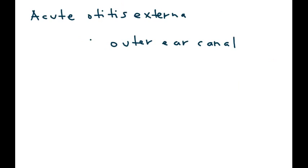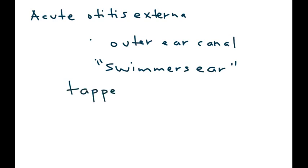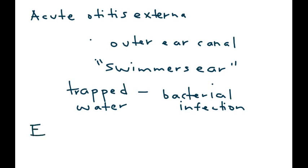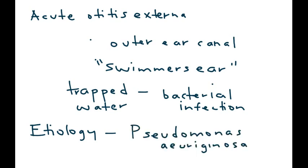Acute otitis externa is an infection of the outer ear canal, nicknamed swimmer's ear. When a person goes swimming, water can get trapped inside and cause a bacterial infection. The most common causative organism is Pseudomonas, specifically Pseudomonas aeruginosa.